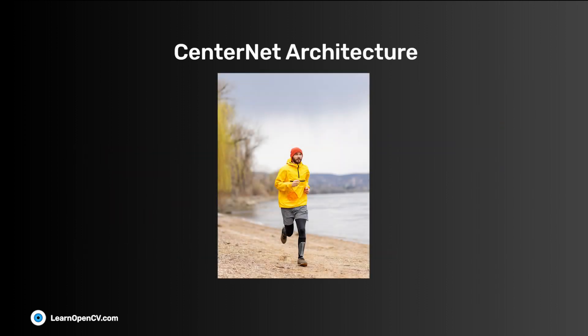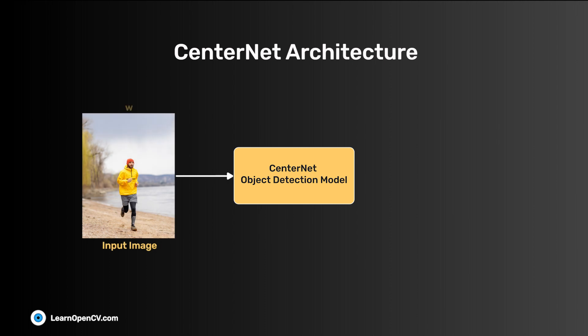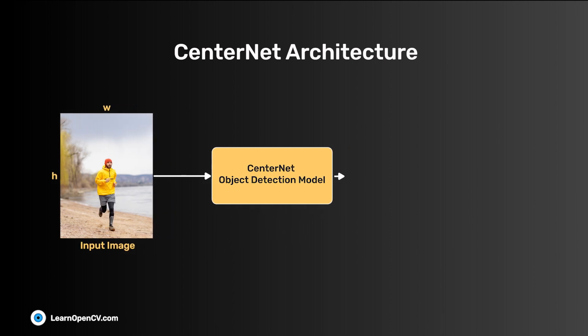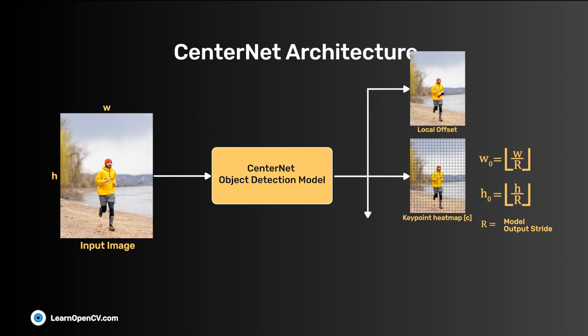CenterNet represents an object as a point called a keypoint. This is the bounding box center. The model takes an input image of width W and height H and outputs a prediction of width floor W by R and height floor H by R. Here, R is the model output stride. It has three heads: the keypoint heatmap, local offset, and object size.